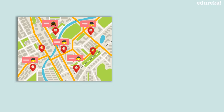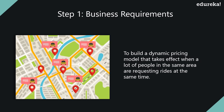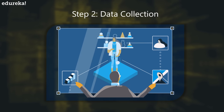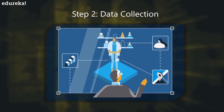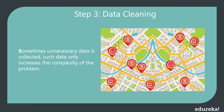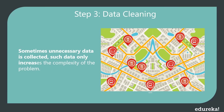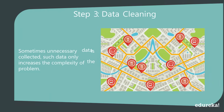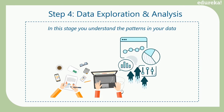Let's see how a data science process works. It always begins with understanding the business requirement or the problem you're trying to solve. In this case, the requirement is to build a dynamic pricing model that activates when many people in the same area are requesting rides at the same time. This is followed by data collection — Uber collects data such as weather, historical data, holidays, time, traffic, and pick-up and drop location. The next stage is data cleaning. Sometimes unnecessary data is collected, such as the locations of nearby restaurants and cafes, which is not needed to analyze Uber's surge pricing and must be removed.